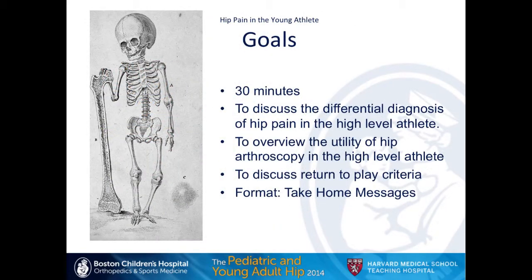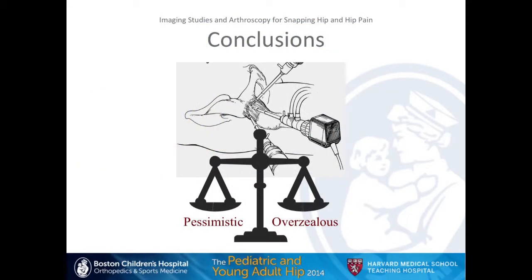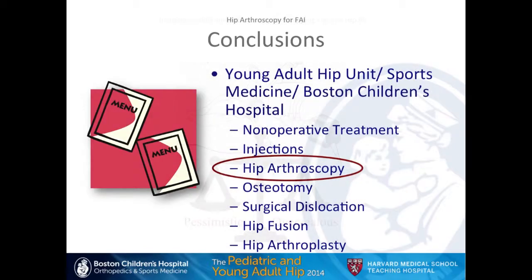In summary, hip injury treatment and diagnosis is certainly evolving. We need careful diagnosis, a multidisciplinary approach, and both open and arthroscopic surgery appropriate for the underlying pathology. A balanced approach — avoiding being overly pessimistic or overly zealous about arthroscopy — is what we are trying to demonstrate here in sports medicine. Thank you.